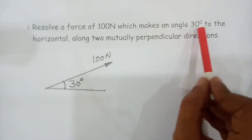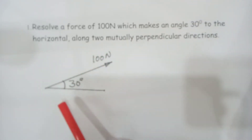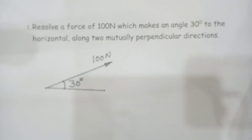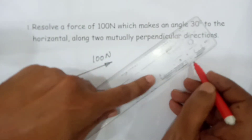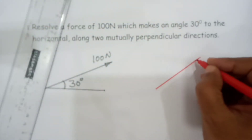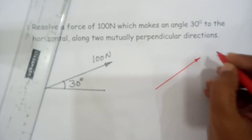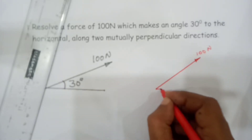Resolve a force of 100 newtons which makes an angle of 30 degrees to the horizontal along two mutually perpendicular directions. For this inclined force, we have to find the two components — the x component as well as the y component — those two being mutually perpendicular.